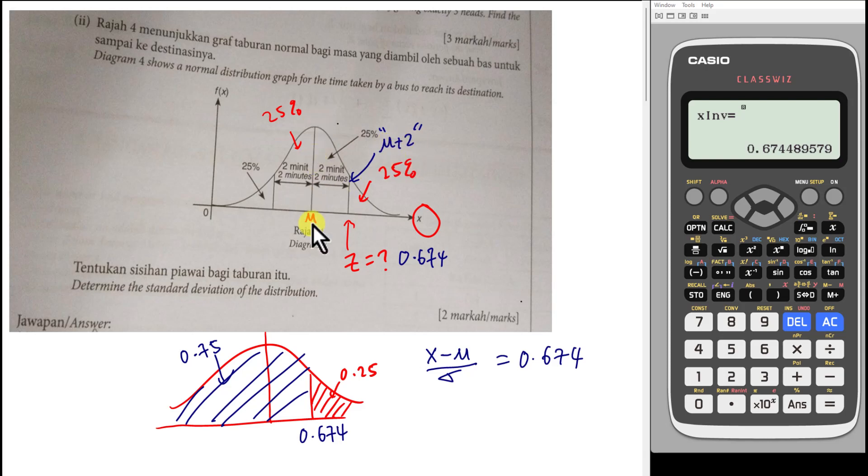But I do not know what exactly is the mean and I don't care. I will just insert it. So this is my x value, which is mean plus 2. And then I minus mean over standard deviation equals to 0.674. So I just need to solve this one.